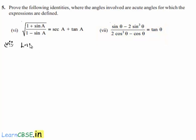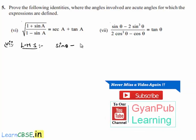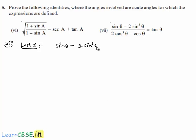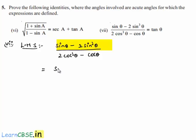In order to prove this, let us consider the left hand side: sin theta minus 2 sin cubed theta divided by 2 cos cubed theta minus cos theta. In the numerator, let us take sin theta as common, then we get the numerator as sin theta into 1 minus 2 sin squared theta.